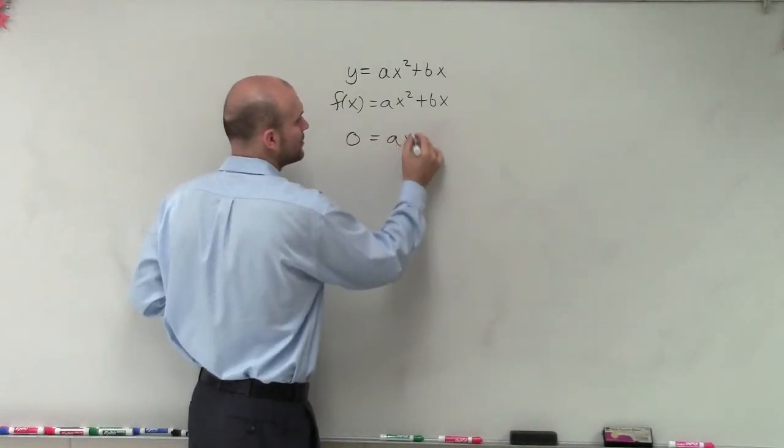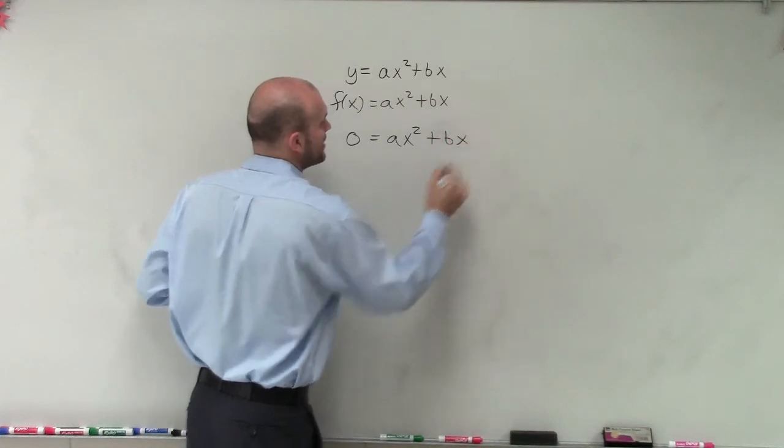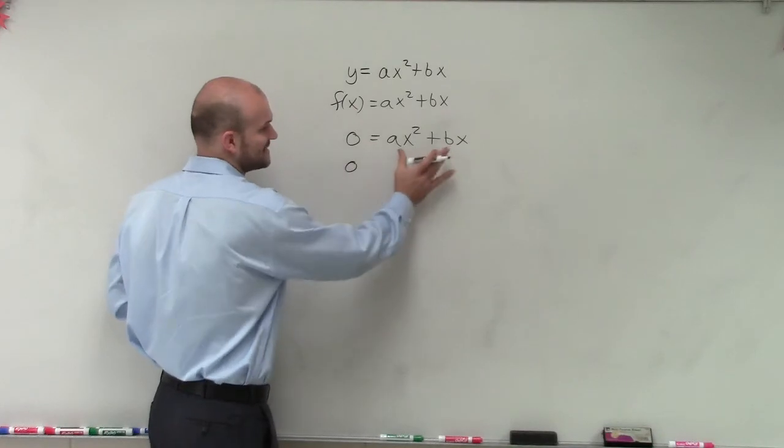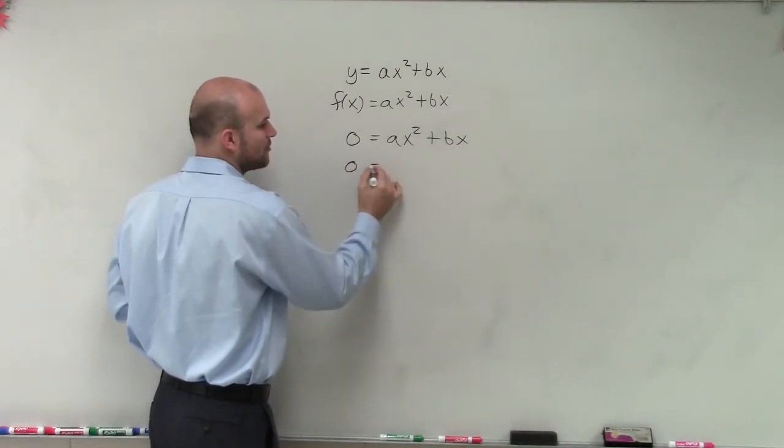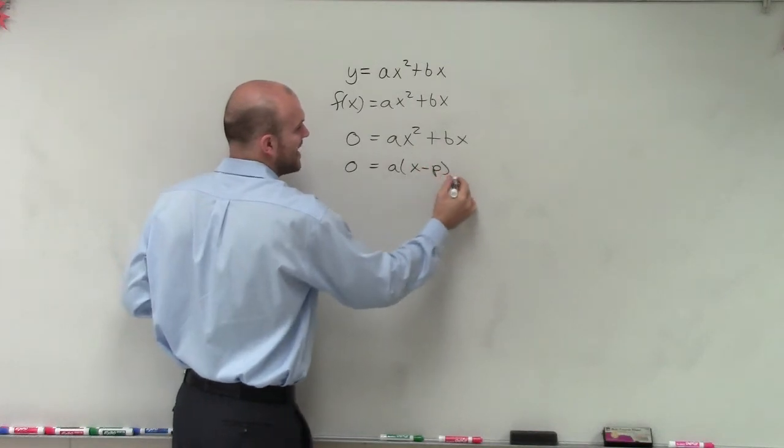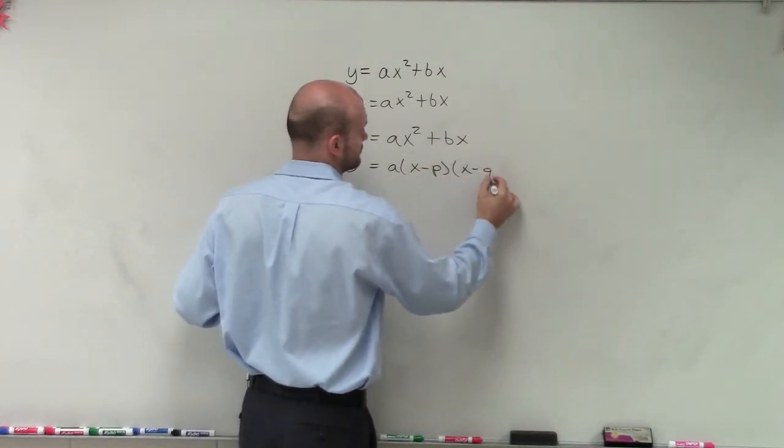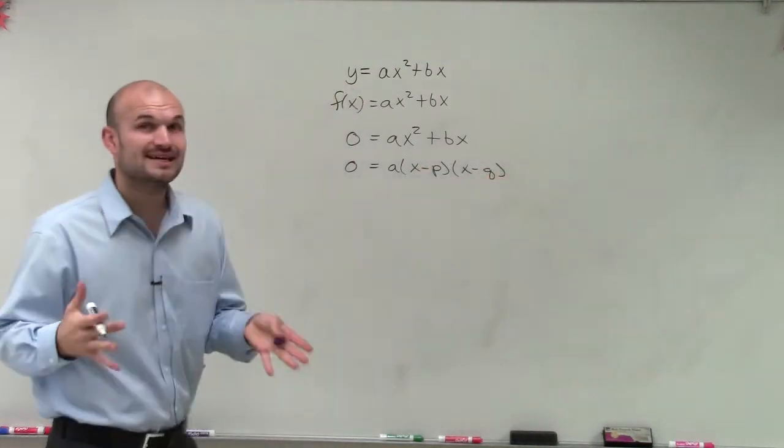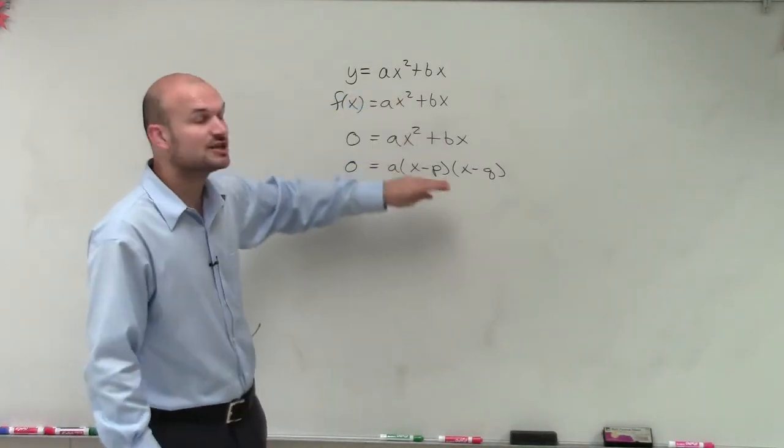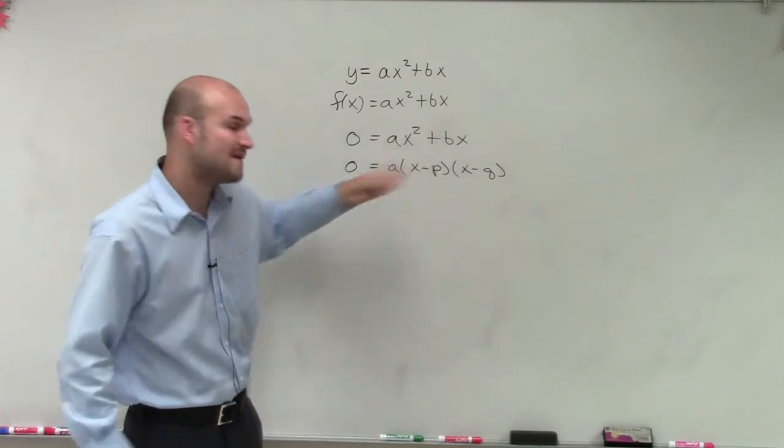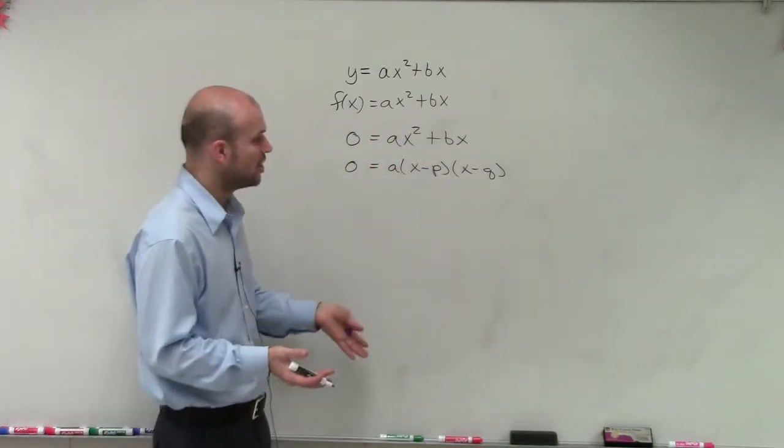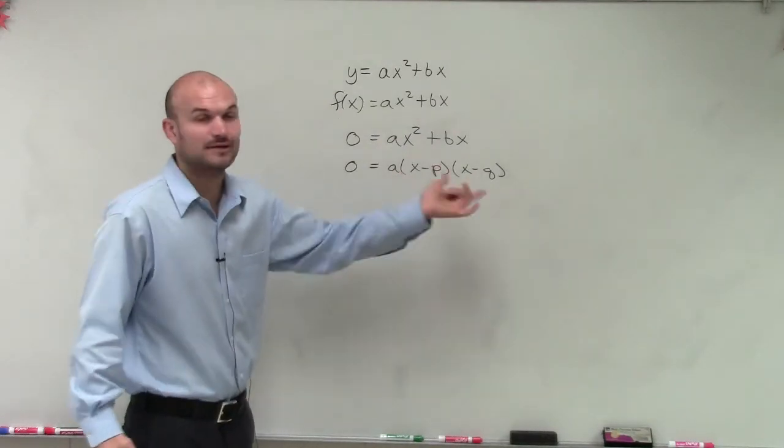So now what we're going to practice doing is we're going to practice factoring this right side. So then what we can do is get this as a product of factors. And once we can get it into our factored form, we're going to try to factor it. And once we can get it to a factored form, then we're going to apply the zero product property to solve, where we can set each factor equal to zero.